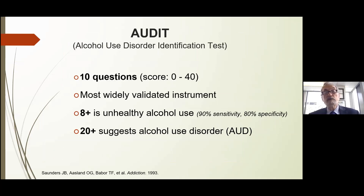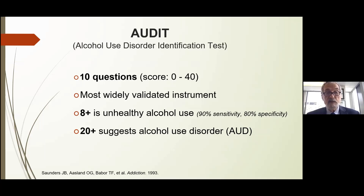Another approach — probably the most well-known and best validated — is the AUDIT, the Alcohol Use Disorder Identification Test. It's 10 questions scored between 0 and 40. A positive score indicates unhealthy alcohol use with strong sensitivity and specificity. A score of 20 or more suggests alcohol use disorder, though it doesn't make the diagnosis. It can be completed before the clinic encounter and scored to inform the visit.